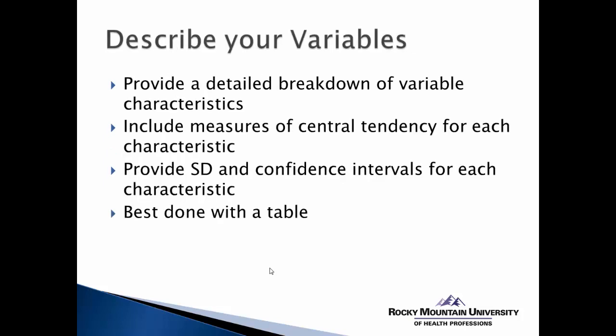As you're describing your variables, whether they be predictor or outcomes, it's really important to provide a detailed breakdown of the characteristics of each of these variables — how can we describe them? What were the measures of central tendency for each variable? If you're using continuous variables, you're going to use either a mean or a median, but if you have a categorical variable as your predictor, you may need to use the mode or percentage to describe the breakdown of that variable.